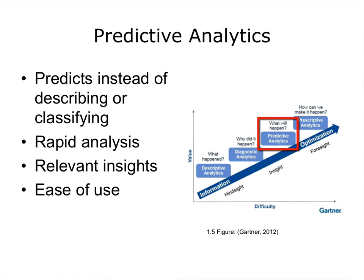Kaiser Permanente analyzed data on infants to develop an algorithm for classifying which babies were at risk for developing sepsis, and conversely, which babies did not need to be treated. Sepsis is described by the Mayo Clinic as a potentially life-threatening complication of an infection — sepsis occurs when chemicals released into the bloodstream to fight the infection trigger inflammatory responses throughout the body, which can damage multiple organ systems, causing them to fail. If sepsis progresses to septic shock, blood pressure drops dramatically, which may lead to death. Kaiser Permanente stated that judicious application of their scheme could result in decreased antibiotic treatment in 80,000 to 240,000 U.S. newborns each year.